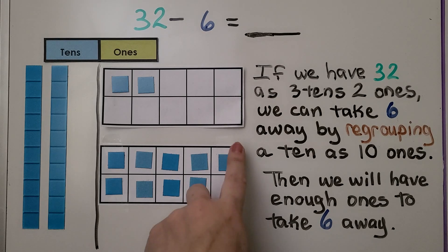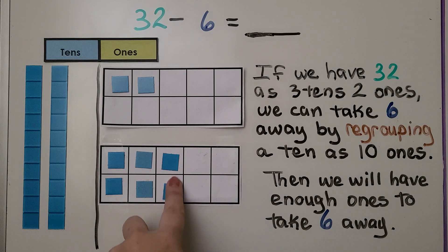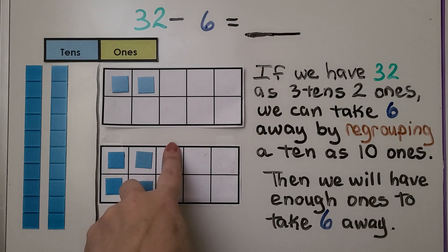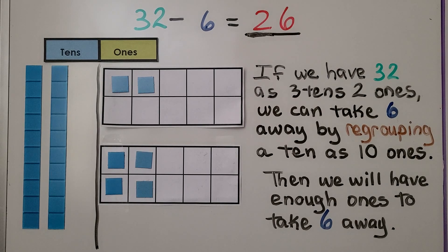We take 6 away: 1, 2, 3, 4, 5, 6. We count what we have left. We have 2 10s, 6 1s. 2 10s and 6 1s is 26. So 32 minus 6 is equal to 26.